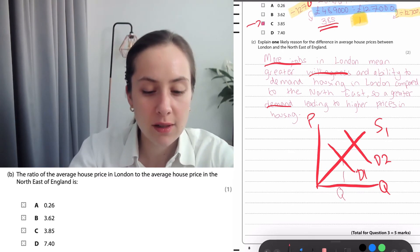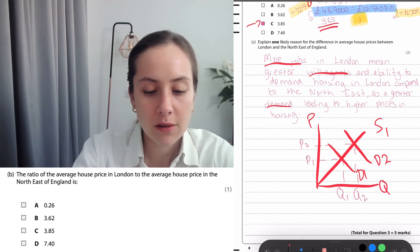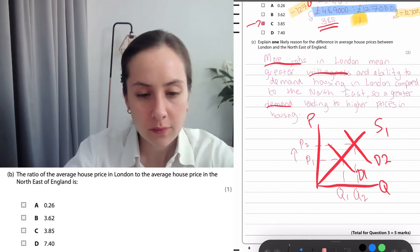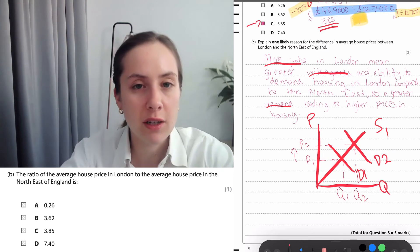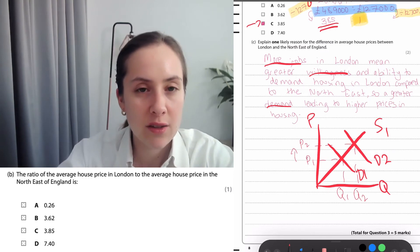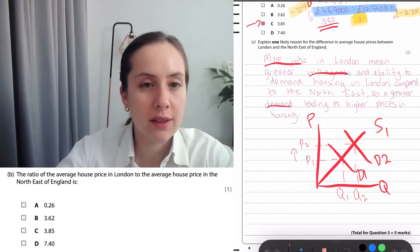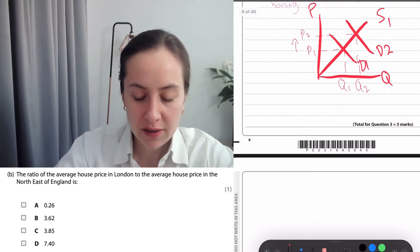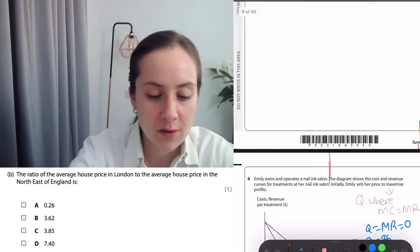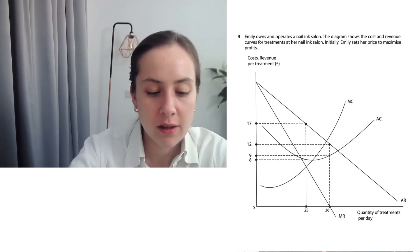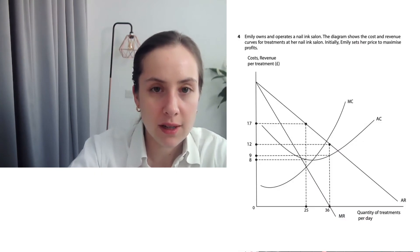The difference in house prices between London and Northeast England: personally, I suggested there could be higher demand for housing. I don't know if you need to draw the full diagram for this, but if it's helpful, it doesn't take too long, that could be quite useful. I've said here more jobs in London mean greater willingness and ability to demand housing compared to the Northeast, so greater demand leads to higher prices in housing. If this was a longer answer, you'd describe this in more detail, but that should be fine for the purposes of that one.